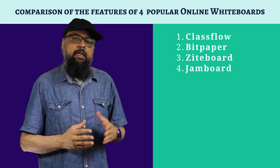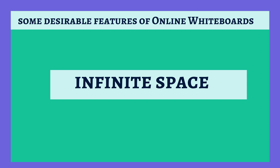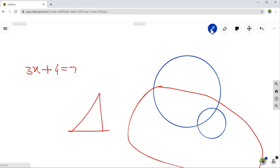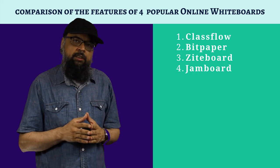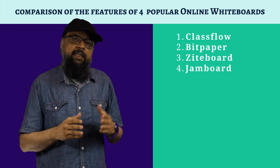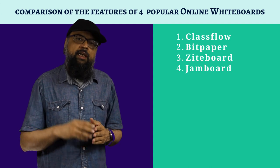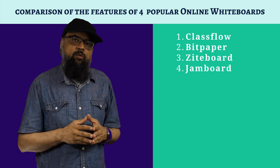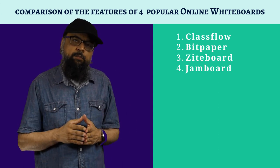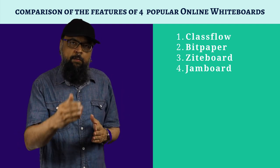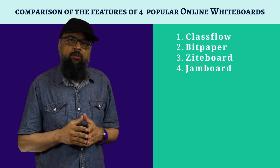The first desirable feature is infinite space. This means you should be able to pan the whiteboard and then continue typing or drawing. Applications like Ziteboard — short for zoomable whiteboard — and Bitpaper both provide infinite space. The benefit is that you can pan across the board and draw your entire lecture on a single whiteboard, and students can download it as an image or PDF. In Ziteboard, for example, you may need to select the A4 option so the whiteboard is converted into A4 pages for the PDF download.